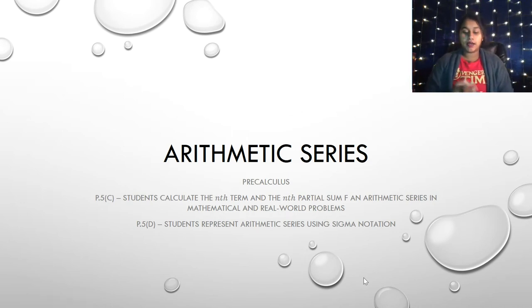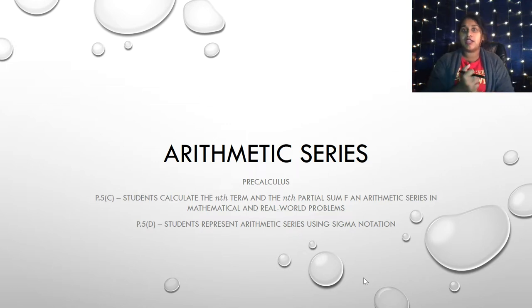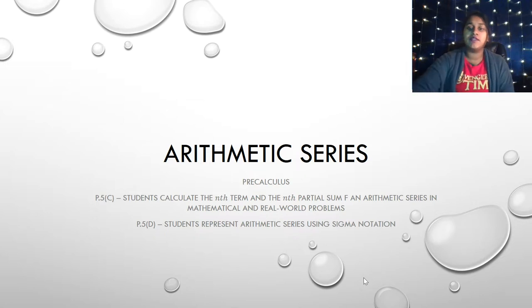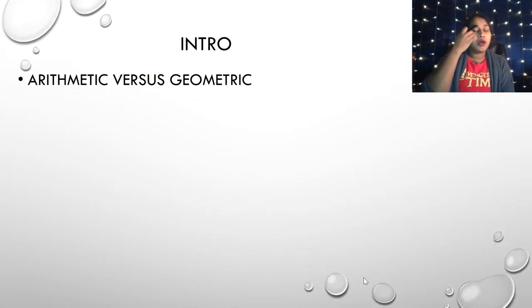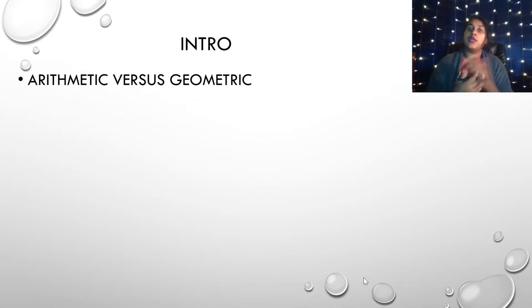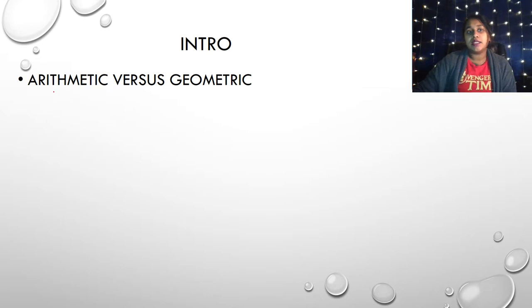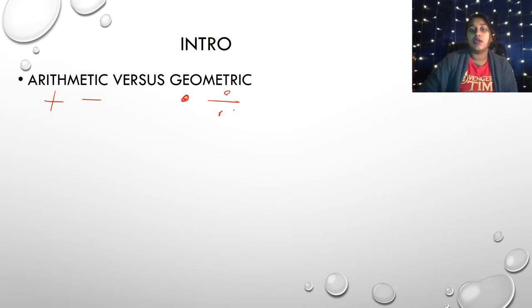Welcome to our second video on series and sequences, unit 5. We are currently talking about arithmetic sequences. To recall what is arithmetic versus geometric: arithmetic involves sums and differences — addition and subtraction — whereas geometric is a ratio, so that is multiplication or division.